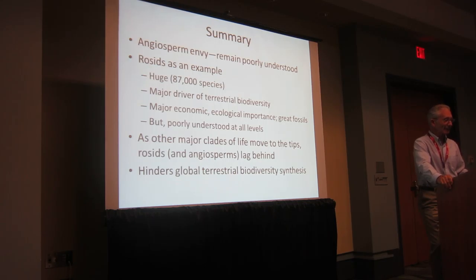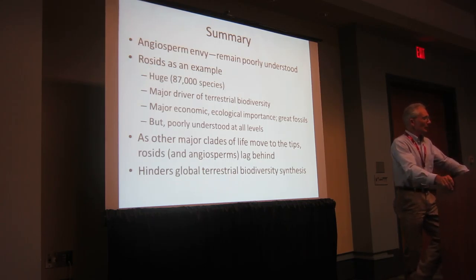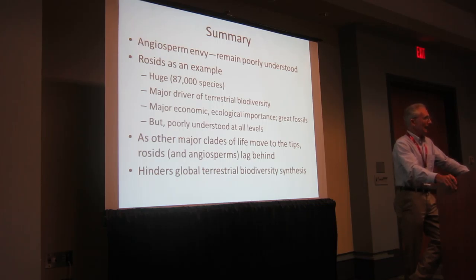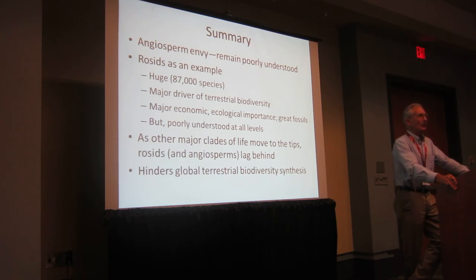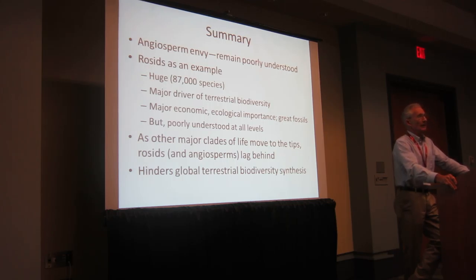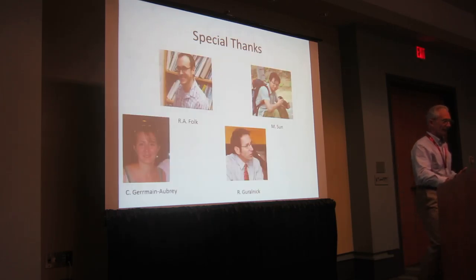In summary: angiosperm envy — let's throw it out, bag it, forget it. Angiosperms remain very poorly understood. Sure, we have genomes here and there, but at the tips we are falling way behind. The rosids are a huge clade, a major driver of terrestrial biodiversity, with major economic and ecological importance and great fossil records — we should be able to do fantastic things with them. But we can't, because they're so poorly understood at all levels. As other major clades of life move to the tips, the rosids — and other big swaths of the angiosperms — lag behind. We need to change that, because these angiosperm clades are the true drivers of terrestrial biodiversity. Thanks again to the people who did the work, and thanks for listening.